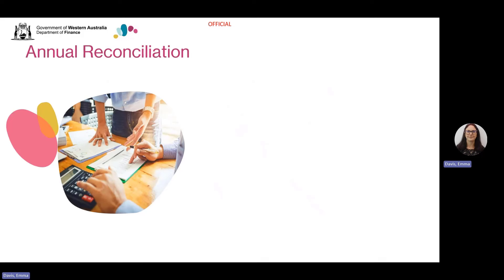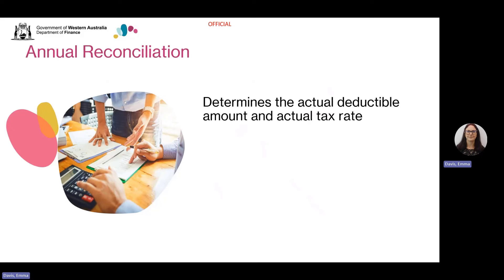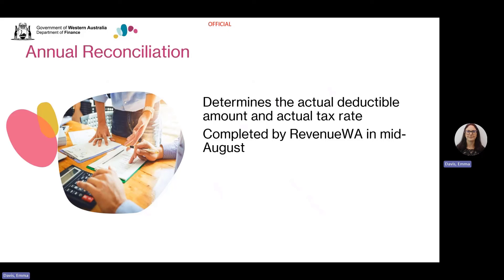Let's have a look at the annual reconciliation. This is the process of finalising the payroll tax returns for the financial year — to determine the actual deductible amount, actual rate of tax and calculate the total payroll tax payable for the financial year. Revenue WA allocates an estimated deductible amount and applies an estimated rate of tax for you to use in your monthly or quarterly returns throughout the financial year, based on the estimated wages you provided to Revenue WA.